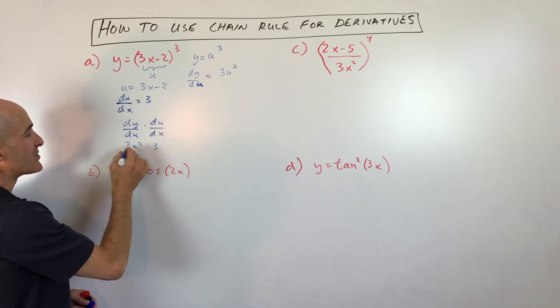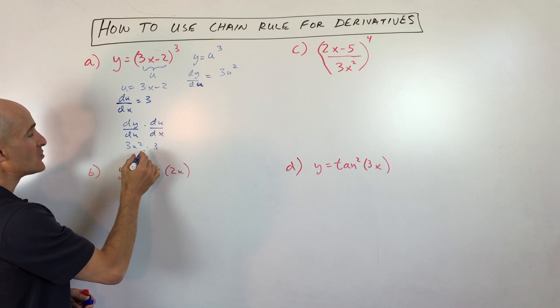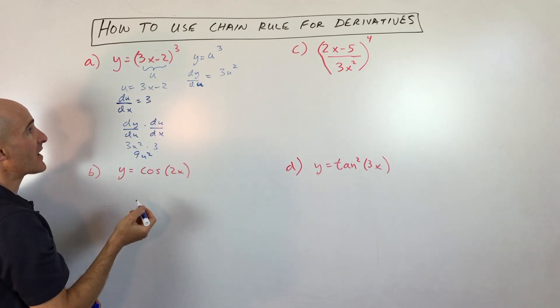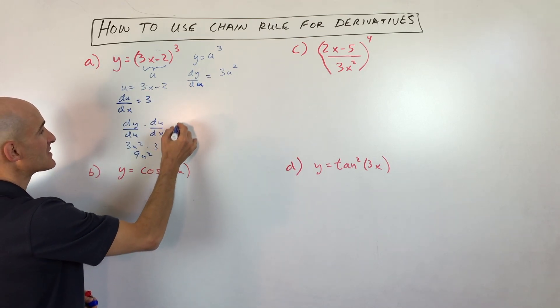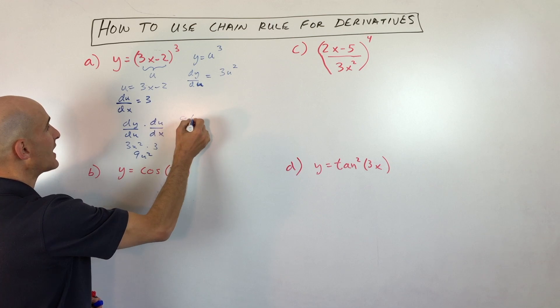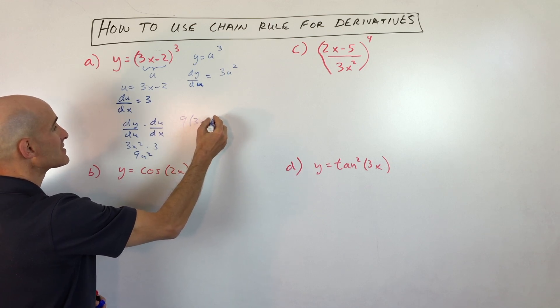So we can see we're getting 9u squared. But what does u equal? 3x minus 2, right? So that comes out to 9 times (3x minus 2) squared.